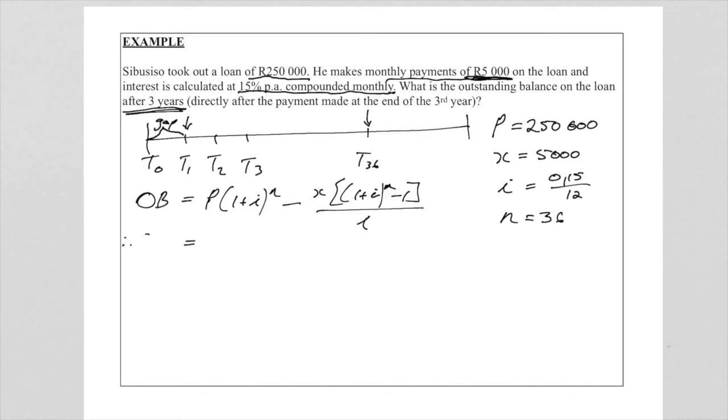So now we substitute. Outstanding balance: the P, the initial amount, was 250,000, so it's 250,000(1 + 0.15/12)^36 minus x which is my monthly payment and that is 5,000(1 + 0.15/12)^36 - 1, all over the i of 0.15/12.